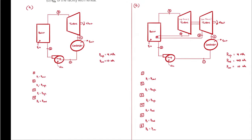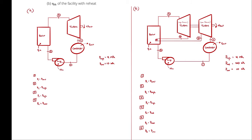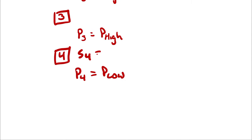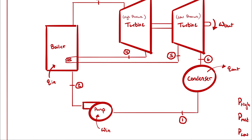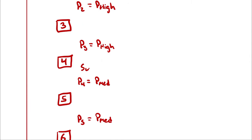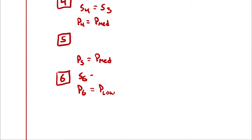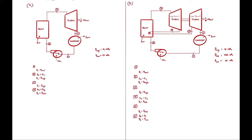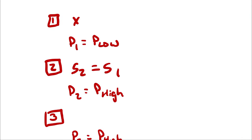Those pressures give half of our required independent intensive properties. For the rest, we assume the pump and turbines operate isentropically, meaning S2 equals S1 and S4 equals S3 in the non-reheat version. In the reheat version, S2 equals S1, S4 equals S3, and S6 equals S5. We also assume the entrance to the pump is a saturated liquid, since the condenser is only condensing — not subcooling or compressing — so the quality at state 1 is assumed to be zero.